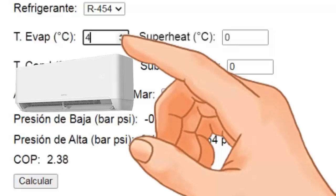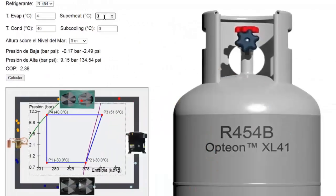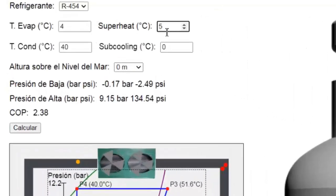For a more accurate calculation, we'll use a superheat setting of 5 degrees Celsius at the evaporator outlet.